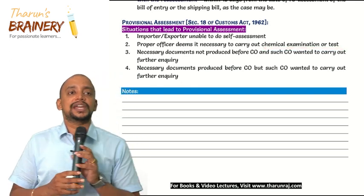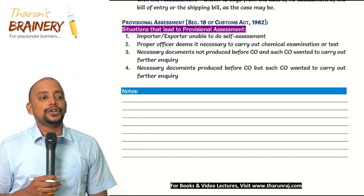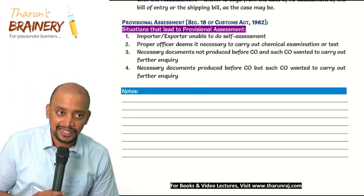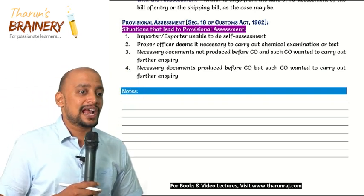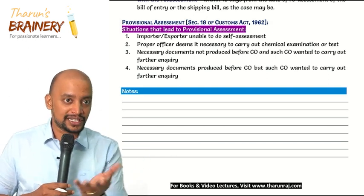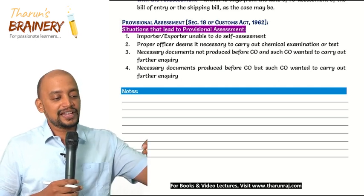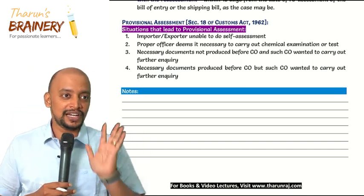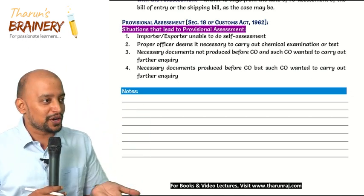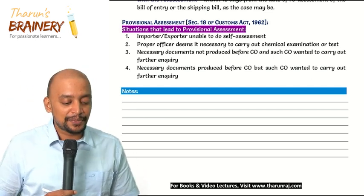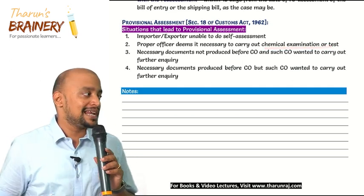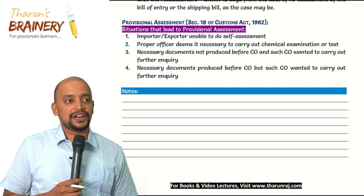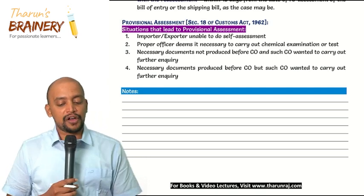The additional situations under customs include: when the proper officer wants to carry out chemical examination or test — for example, some goods are imported and the importer declares some value, but the proper officer is of the opinion that the goods are concealed, like people importing gold in a concealed manner by melting it into greeting cards or invitation cards. Also, when necessary documents are not produced before the customs officer and the officer wants to carry out further enquiry.